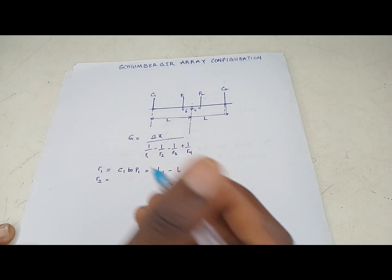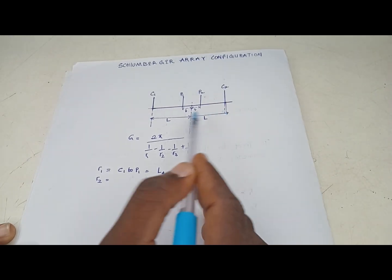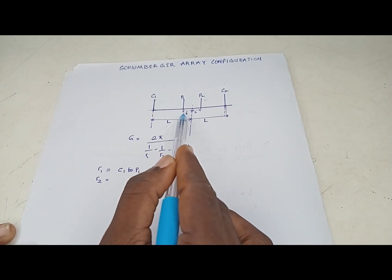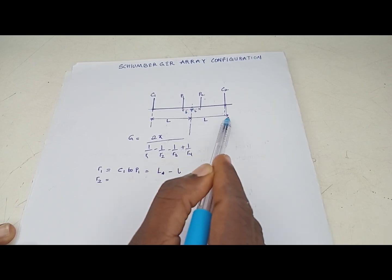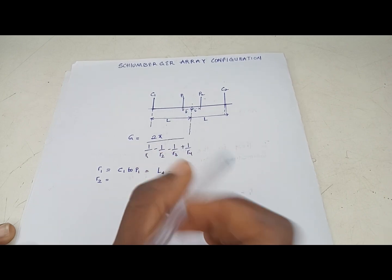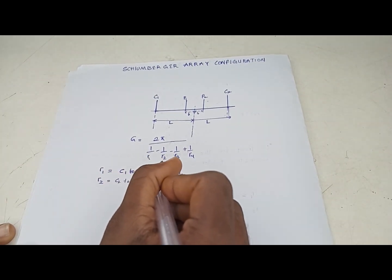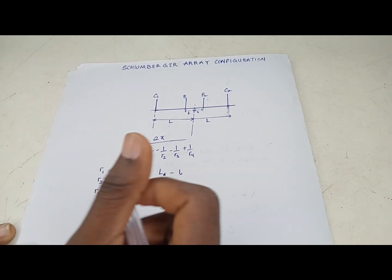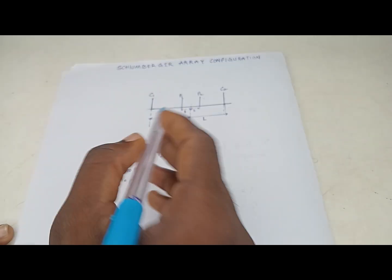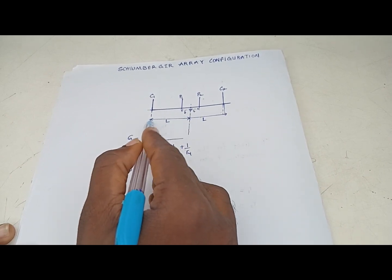For r2, which is the distance from C2 to P1: C2 to the midpoint is capital L, but we have not yet reached P1, so we need to add small l. Therefore r2 = L + l.